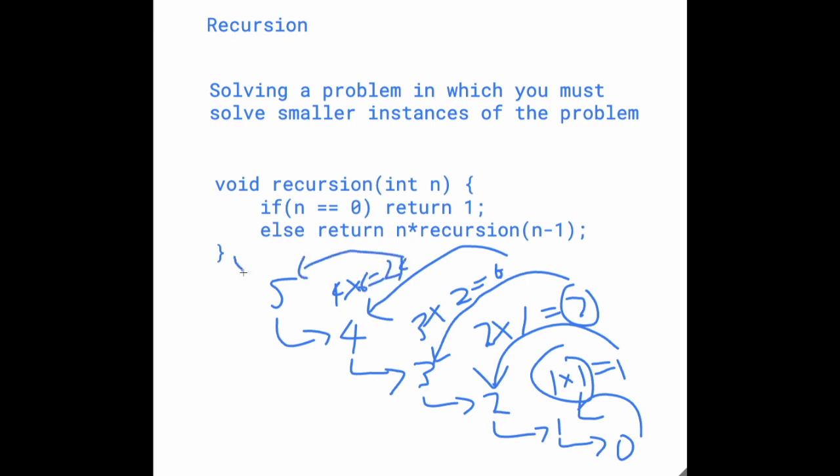And then we go here, which is 5 times 24, which is 120. So if you haven't already realized, this is basically calculating the factorial of n. And the way this recursion works is that we're basically recursing until we get to 0. And then we're working backwards.